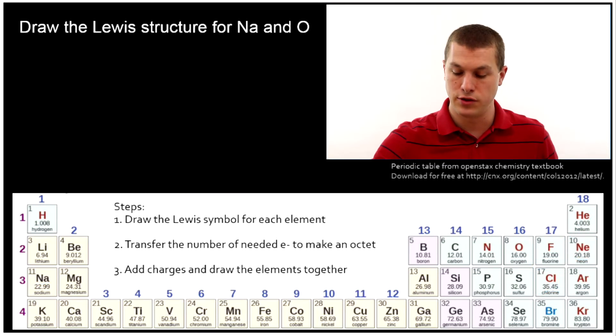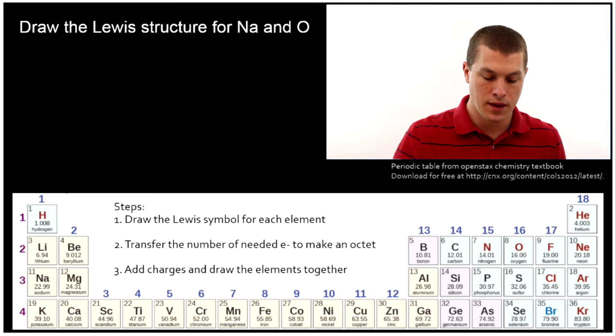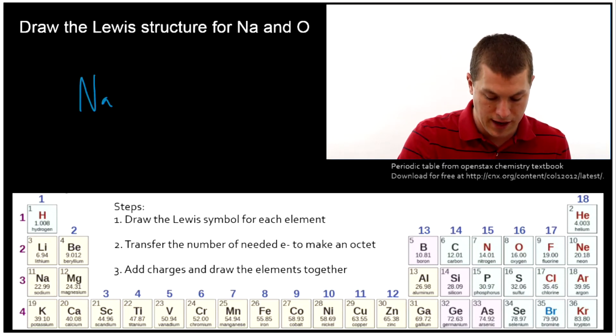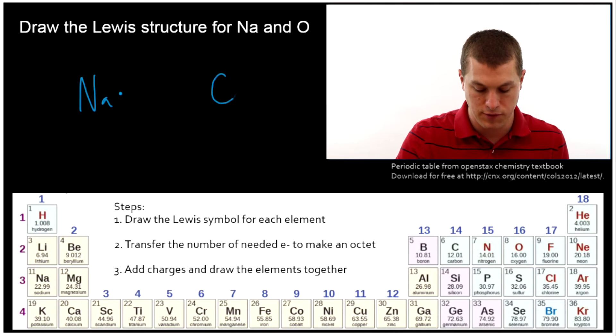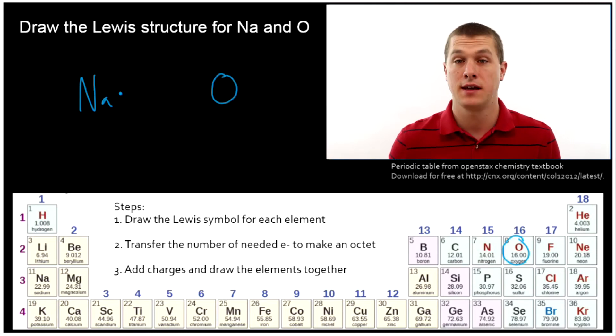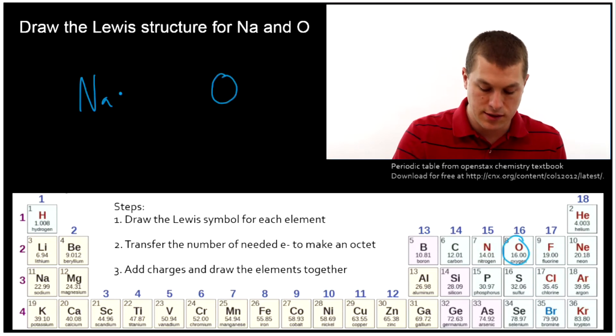Let's take a look at another. So now let's look at sodium oxide. And here we'll draw the Lewis symbol for each element once again. So sodium is going to have one valence electron, just like it did before. And oxygen, because it's the sixth box over, will have six valence electrons.